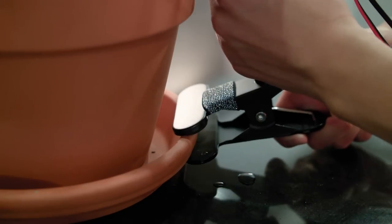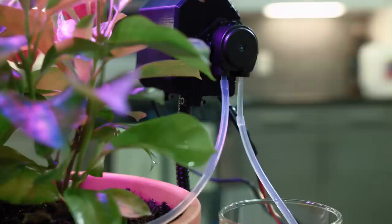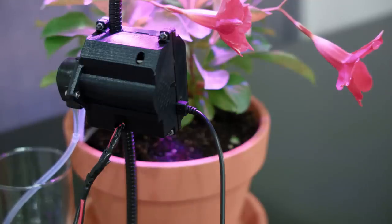It attaches to the pot via a small clamp and can be adjusted for different sized plants. All the components are controlled through a Raspberry Pi Zero which can schedule when your plant gets light or water.